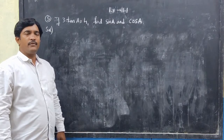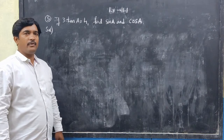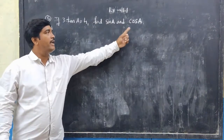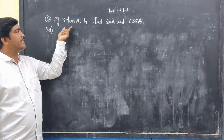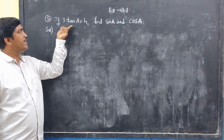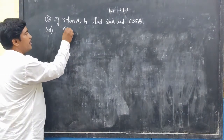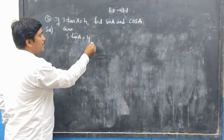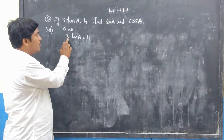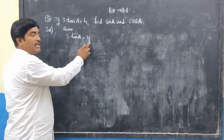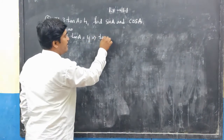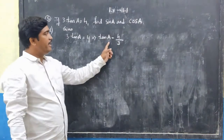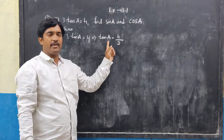We now solve the fifth problem of exercise 11.1. The given problem is 3 tan A = 4. First, I rearrange: tan A = 4/3. This is the trigonometric ratio value.